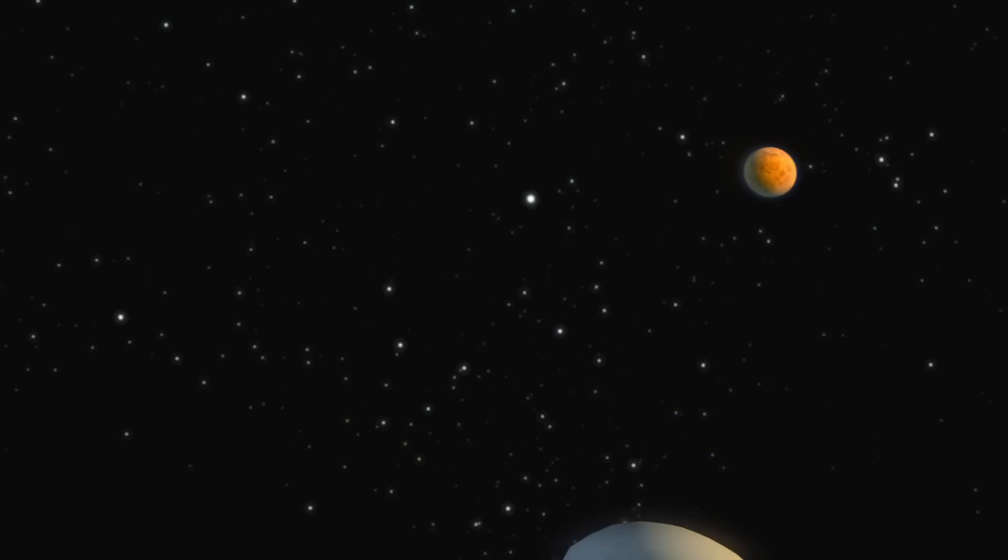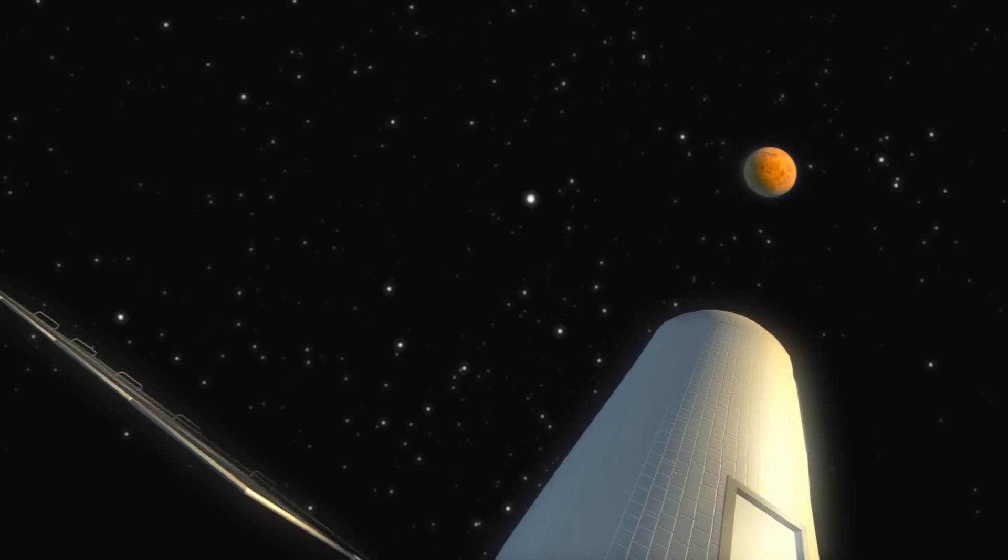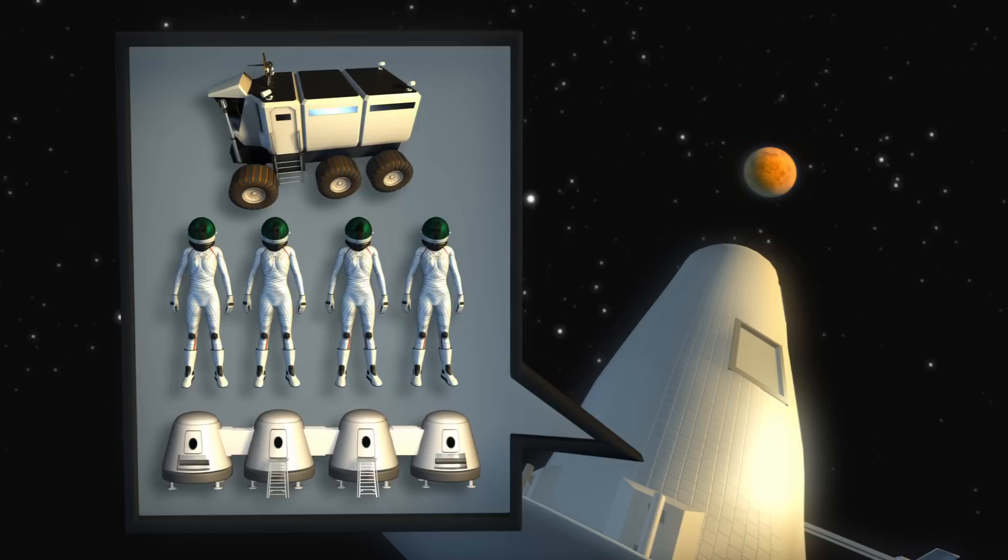Two years after the ERV was launched, a manned spacecraft carrying four astronauts, a habitation module, and a pressurized rover is launched to Mars.